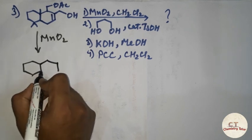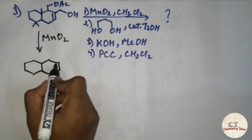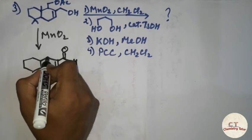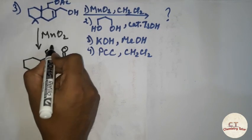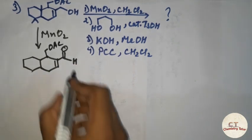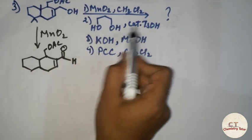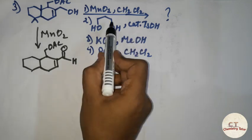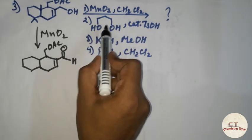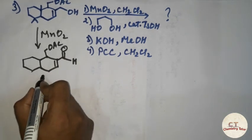MnO2 is mainly used for oxidation of benzylic and allylic systems. So here it will become an aldehyde, and the OAc group will remain as such. The next step uses a 1,3-diol, which is for the protection of the carbonyl system.